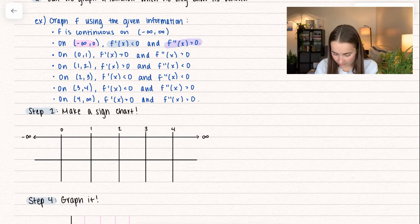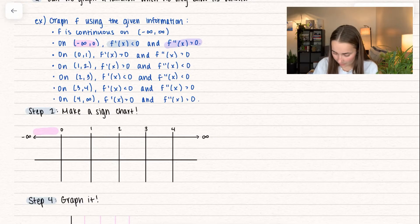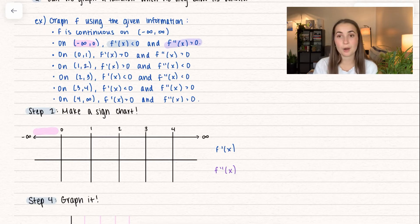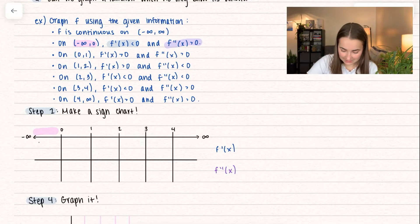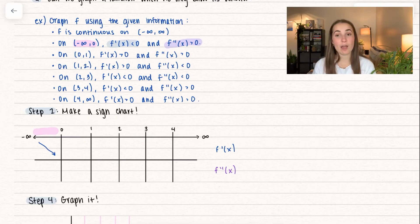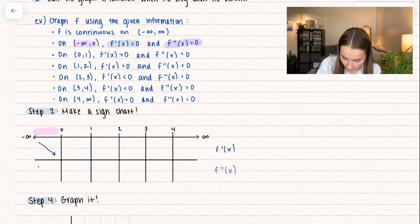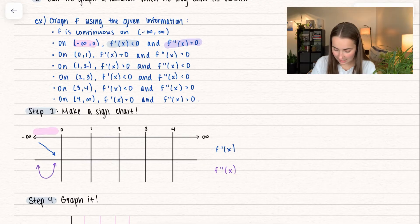Let's look at our first interval, from negative infinity to zero. For the first derivative: f prime of x is less than zero, so the function is decreasing. For the second derivative: it's greater than zero, so it's concave up. So here we have a function that is concave up and decreasing.